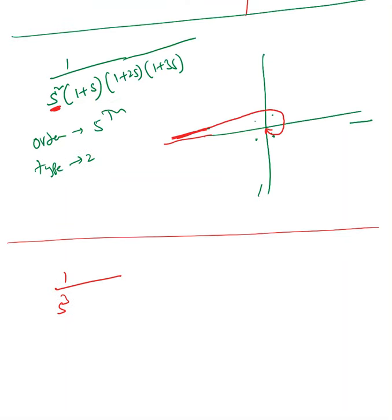So the order of the system is fifth order and type two. We know type zero, type one, type two — type two starts from there, and fifth order ends right there. Since there are poles at the origin, this axis is met at infinity. That's how to determine the approximate polar plot. I'll stop this video here and make another video — thank you.